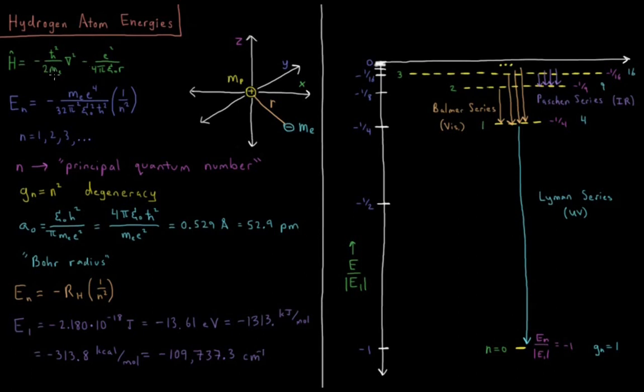We are using the mass of the electron here instead of the reduced mass of this system because we are assuming that this proton is fixed at the origin and does not move.